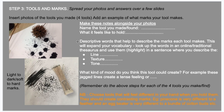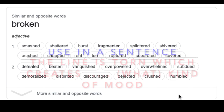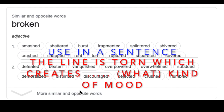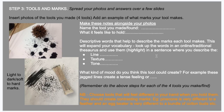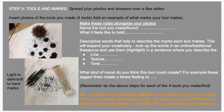Use those thesaurus words in a sentence where you describe the line, texture, and tone that your marks make. For example, you might look up the word 'broken' and find synonyms like fragmented, torn, splintered. Then use them in a sentence: 'The line is fragmented,' or 'It is crushed, it is snapped, it is torn, it is ruptured.' Look up words that describe texture and tone — this will help a lot with your visual literacy.